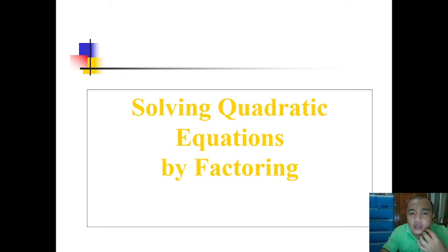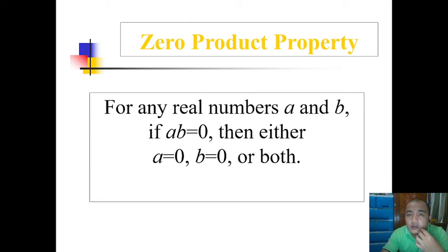Hello grade 9 students, this time let's learn how to solve quadratic equations by factoring. In this topic we will apply the zero product property, which states that for any real numbers a and b, if ab equals 0, then either a equals 0, b equals 0, or both.